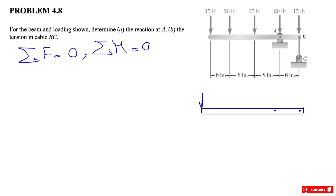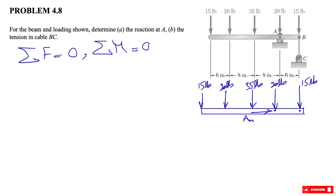We have the 15 pounds, the 20 pounds, and the 35 pounds. At point A we have a 20-pound force, and at point B we have a 15-pound force. At point A we have a pin, which means motion is restricted in both the x and y directions. At point B we have a cable attached to the beam. We have all the distance information, so we can start with our equilibrium equations.